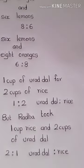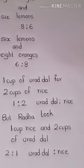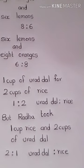Radha's dosa turned out tough and not good. She complained to her mother. Her mother explained that she had asked for one cup of urad dal and two cups of rice, but Radha had taken two cups of urad dal and one cup of rice. This is what can happen in exams too — the order of numbers in a ratio is very important, so don't write it the other way around.